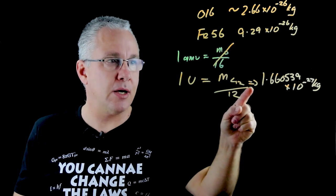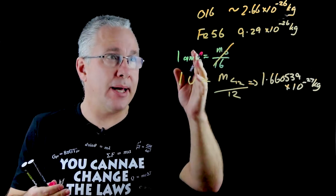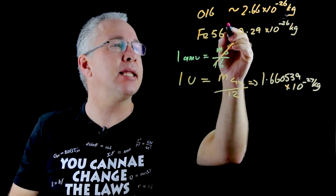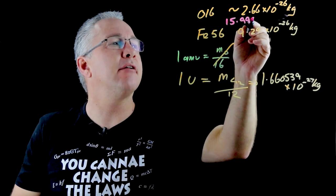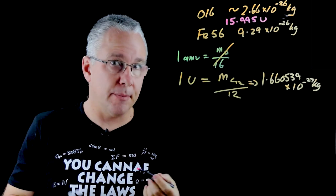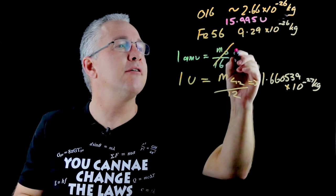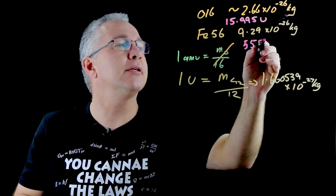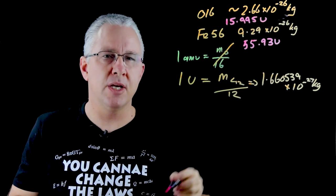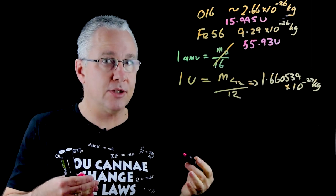But that was determined experimentally by measuring the mass of the carbon and dividing it by 12. So as a result this becomes our one atomic unit. What about our oxygen 16? Well it now becomes 15.995u. What about our iron? It becomes 55.93u. So these are numbers that are much easier to work with.